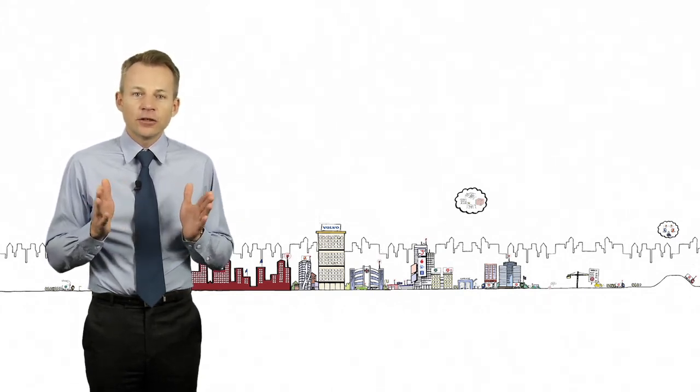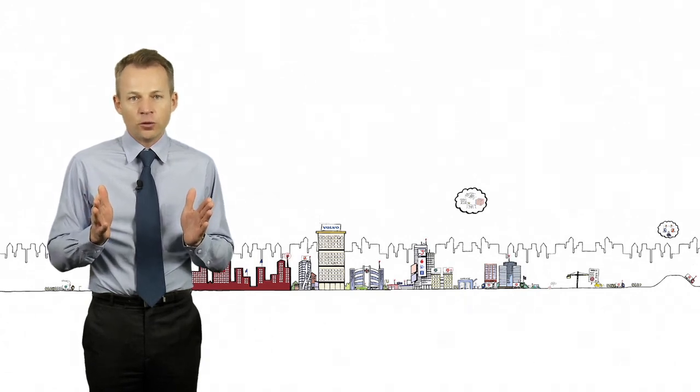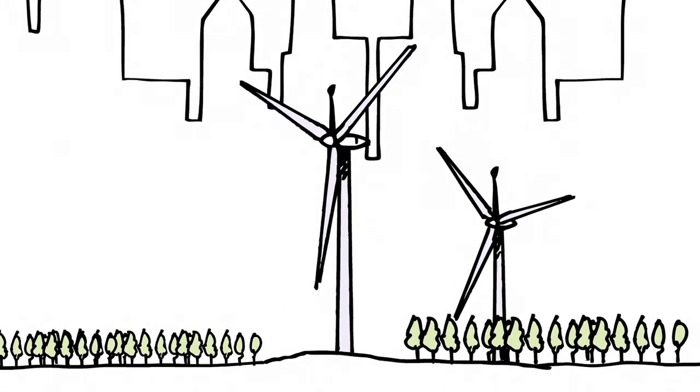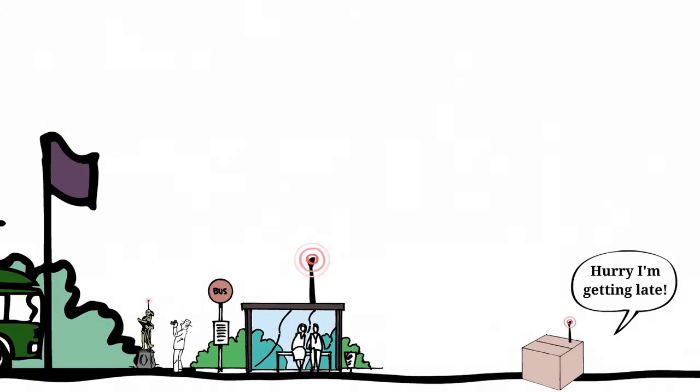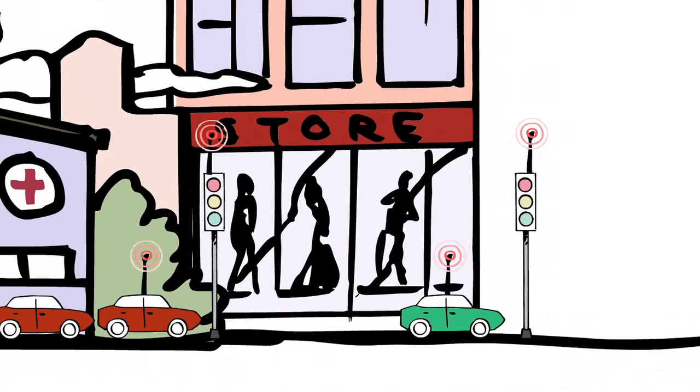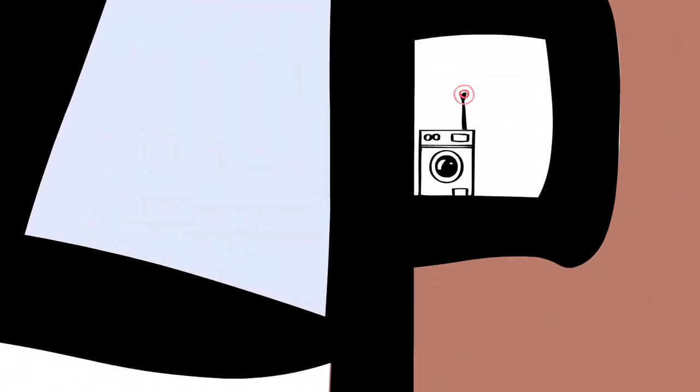The ecosystem in the Connected Society will continue to grow. Here are a few examples of things that also will be connected. The wind power stations, the bus stops, traffic lights and even the washing machines will be connected.